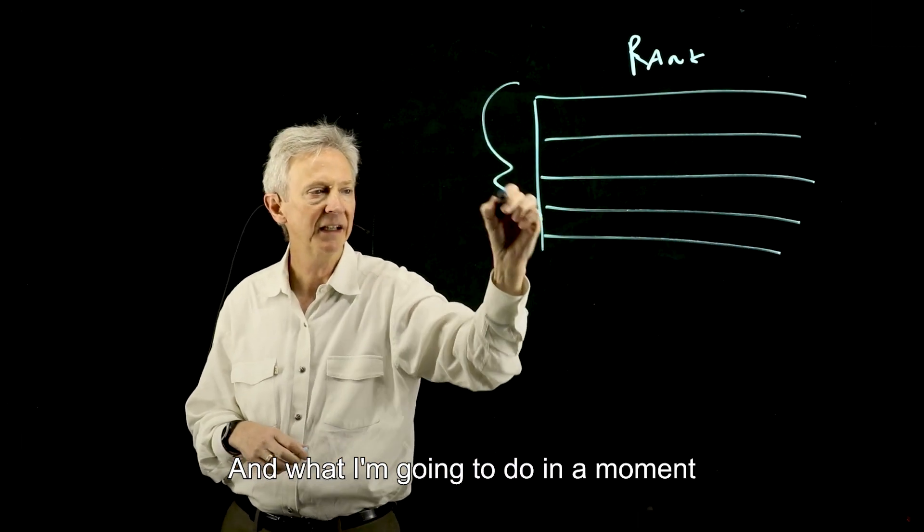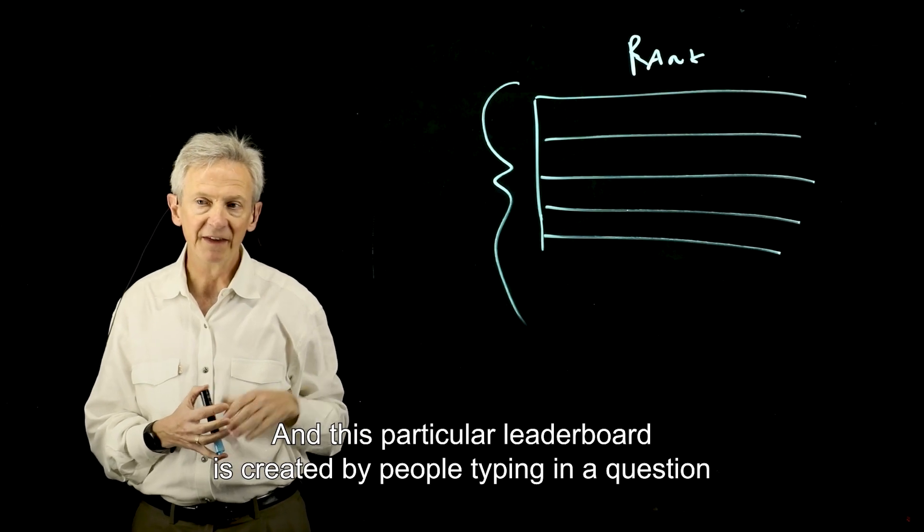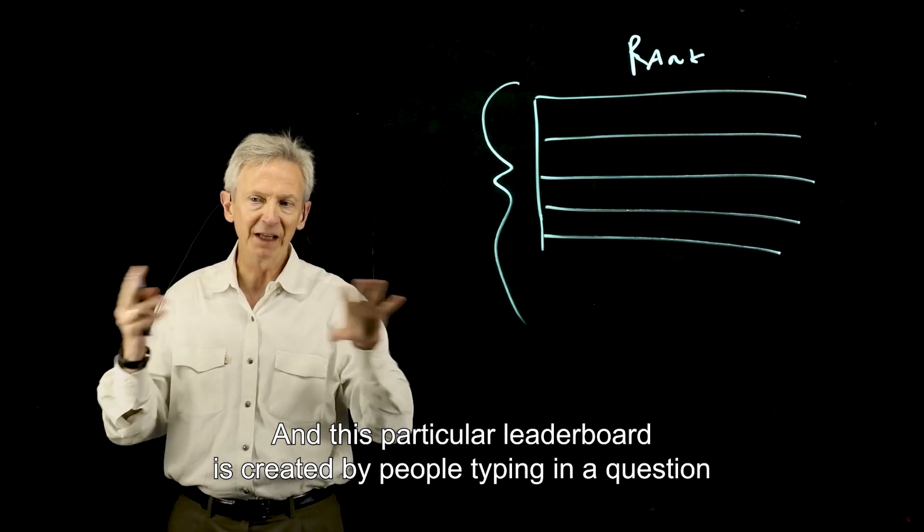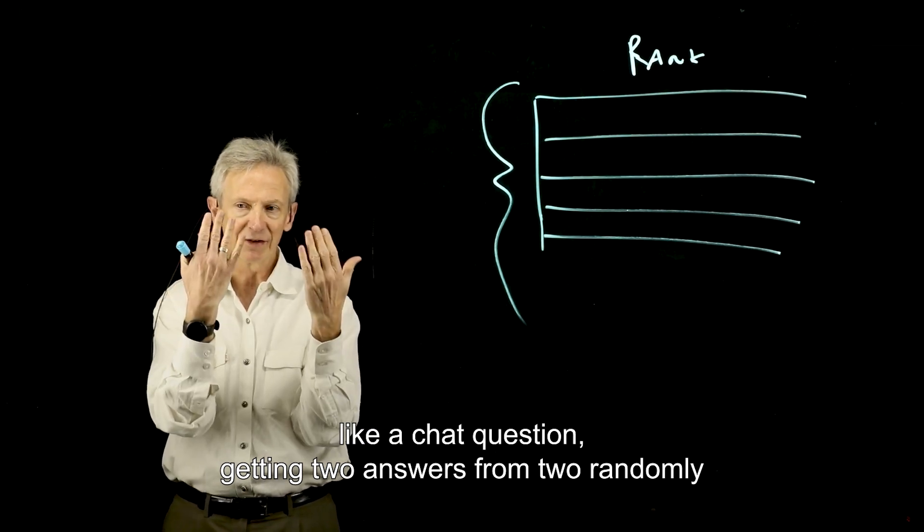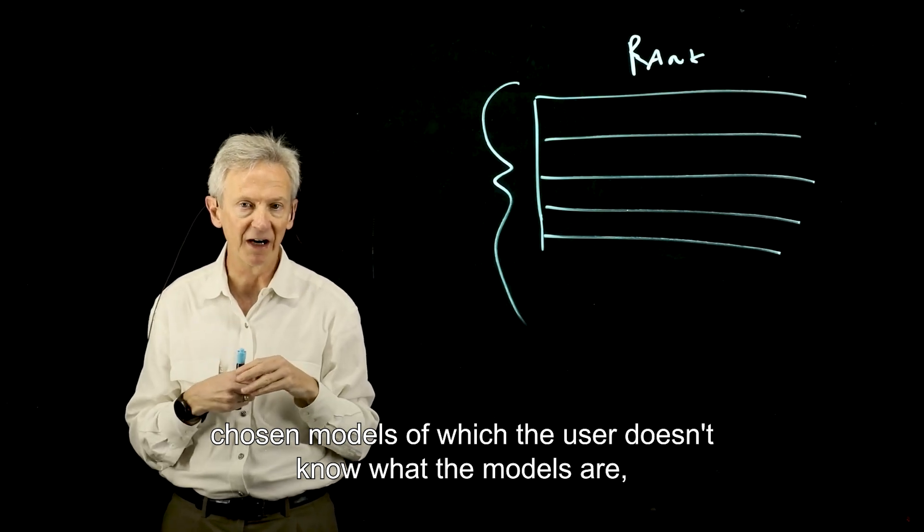And what I'm going to do in a moment is go to my computer and show you a leaderboard. And this particular leaderboard is created by people typing in a question, like a chat question, getting two answers from two randomly chosen models of which the user doesn't know what the models are.